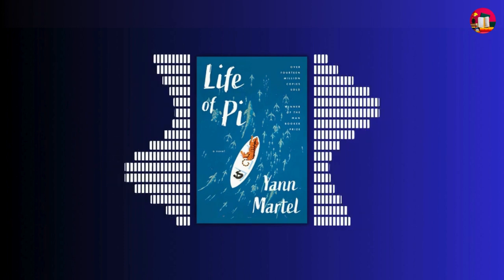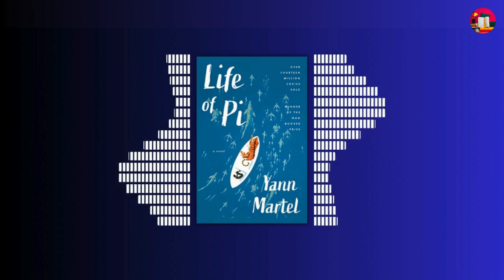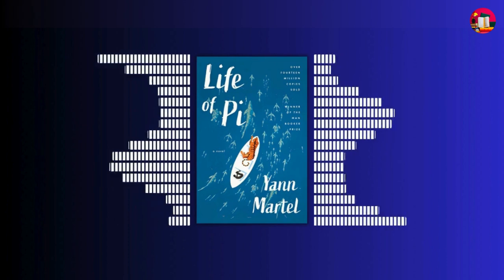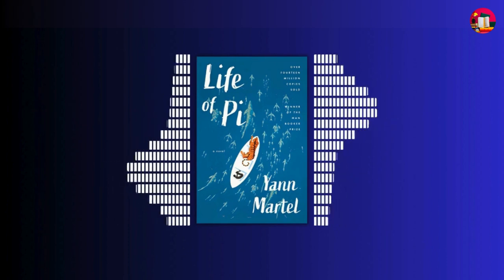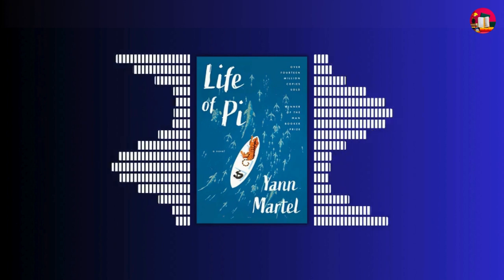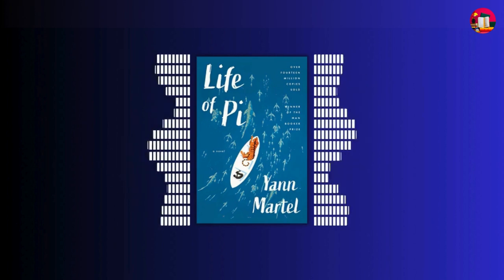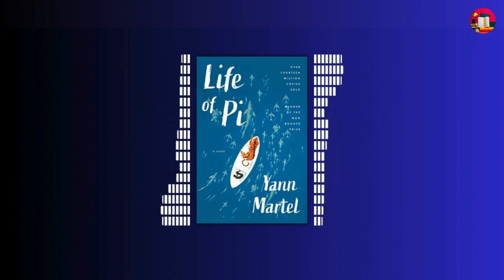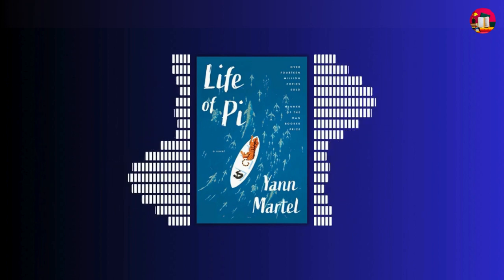However, Pi's idyllic life is shattered when his family decides to move to Canada due to political unrest in India. They embark on a journey across the Pacific Ocean aboard a Japanese cargo ship named the Tsimtsum, along with some of the animals from their zoo, including Richard Parker.